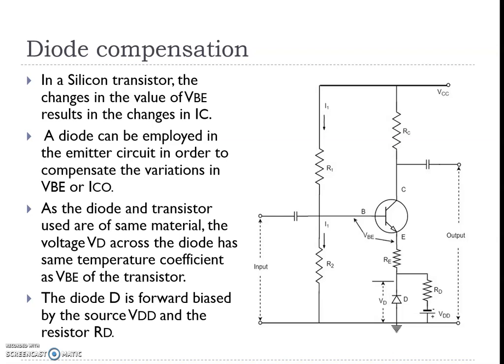First is diode compensation. For one silicon transistor, the change in the base value of VBE results in a change in IC. The VBE value is not constant. A diode can be employed in the emitter circuit in order to compensate the variations in VBE.